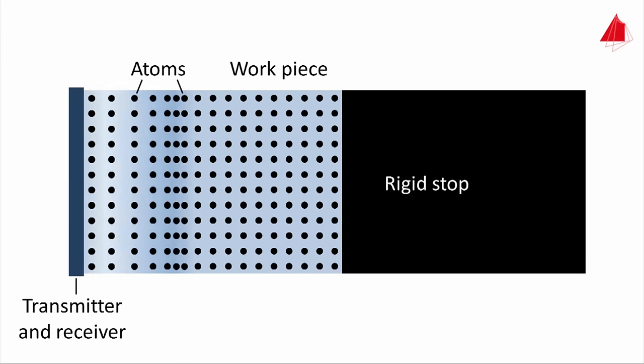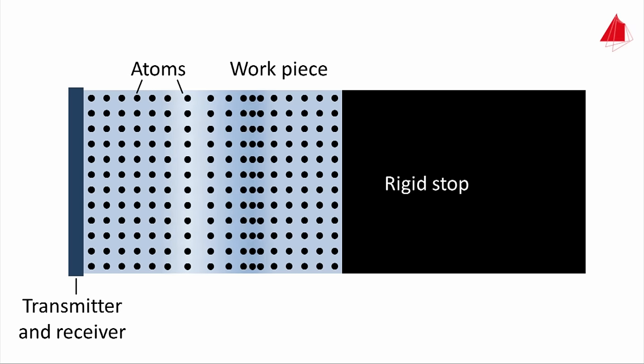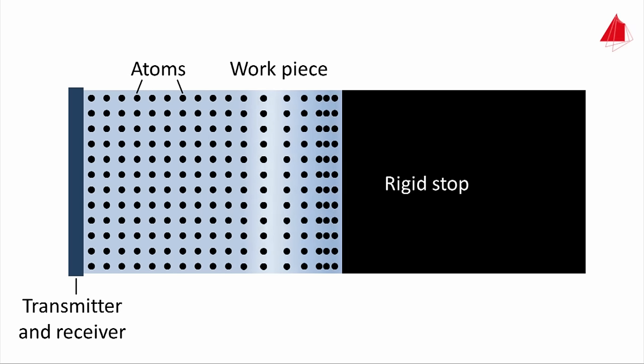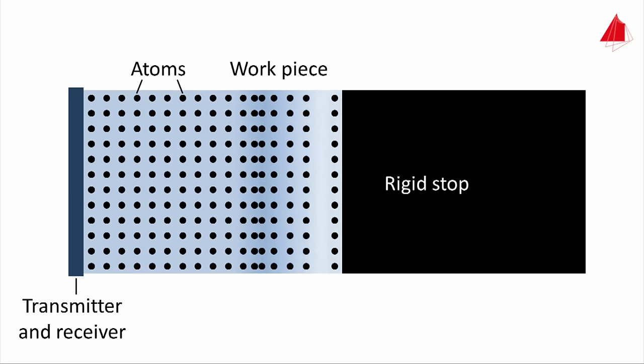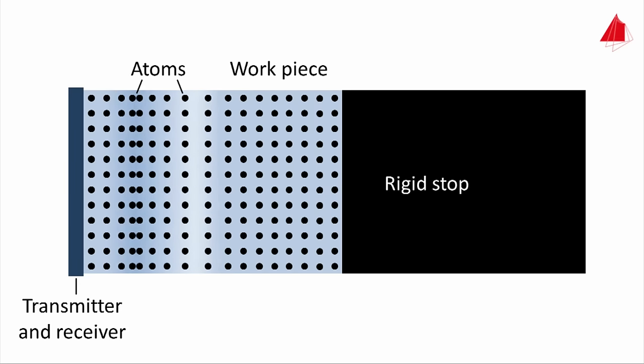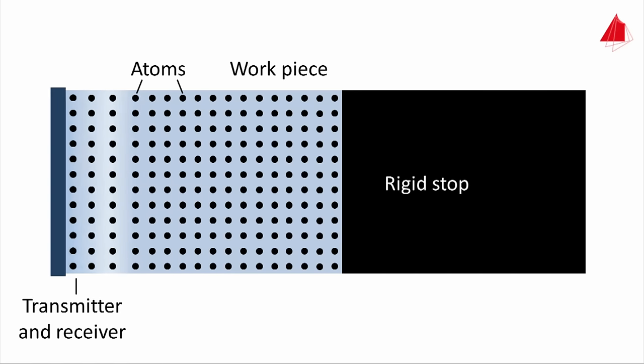Pushing and pulling briefly at the disc causes a longitudinal sound wave to propagate through the cylinder. When the sound wave reaches the rigid stop at the right side, it is reflected and runs back towards the disc, which now serves as a receiver.